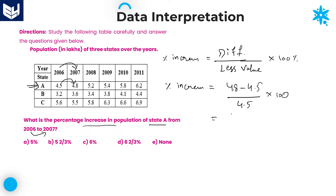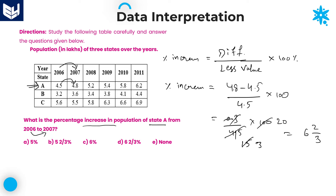Here it is 0.3 divided by 4.5 into 100. The decimal points are cancelled: 3 over 45. Then cancel with 5 table — 20 by 3. 20 by 3 is nothing but 6 and 2/3 percentage. Therefore, the required percentage increment is 6⅔ percent. Option D is the right answer.